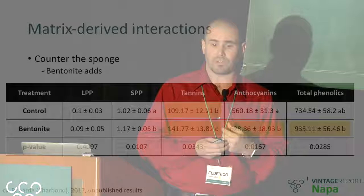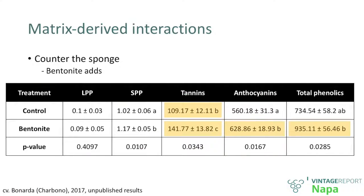If we accept the model that skin tannin extraction is at least partially modulated by proteins, someone had the great idea of fining the must with bentonite prior to fermentation. I have a doctoral student in Argentina working with a variety called Bonarda, or Charbono here in California — beautiful variety, lots of color, beautiful acidity, second most planted variety in Argentina — but with zero tannins. What she did is take a portion of the must prior to fermentation, fine it with calcium bentonite, add it back, and then we had 40% more tannins. We know that we are fining those proteins, and by fining those proteins, we are minimizing that interaction and retaining more. In addition, we are also getting more anthocyanins and more total phenolics.